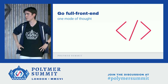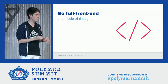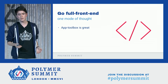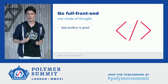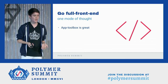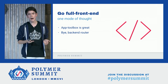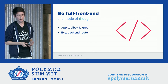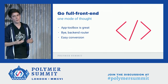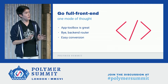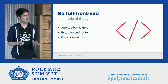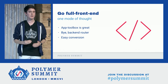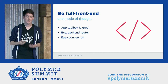Tip number three: go full front end. Instead of switching between multiple modes of thought, use the front end — make it the star of the show. The app toolbox is great. It can handle routing, layouts, storage, and even offline capabilities. For example, putting iron-pages and app-route together, you can remove most needs for a back-end router. And if you want to keep it around a bit longer, web components makes it really easy to scale things back and move them to the back end — you already have an API sort of established. The talk this morning by ING really exemplified this.